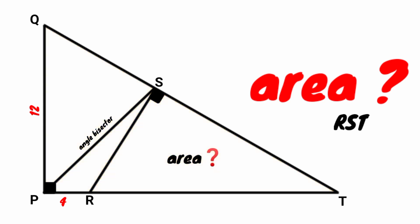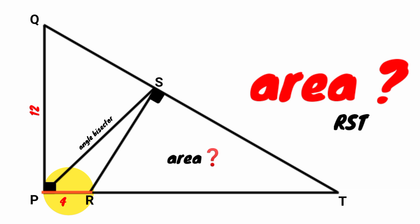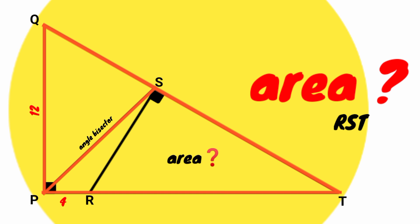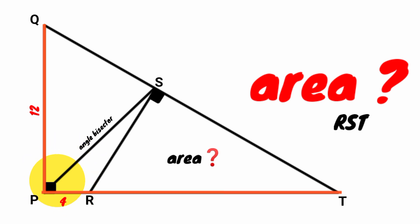Hi friends, you are welcome back to another interesting question. We are to calculate the area of triangle RST. We have the length of side PQ given to be 12 units, and the length of this line segment is 4 units. This line PS is an angle bisector of this triangle. We see that angle RST is a right angle, and angle QPR is also a right angle.